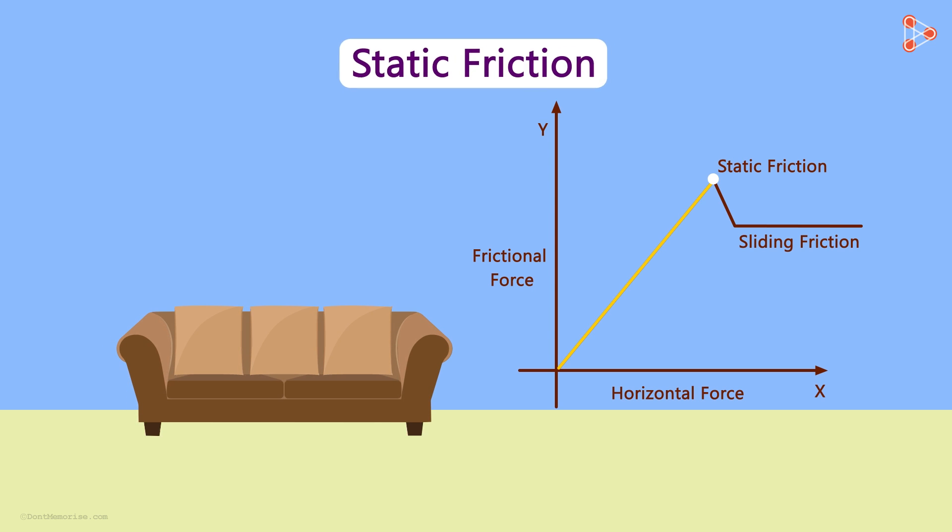This part of the graph is static friction. It's when the sofa is not moving in spite of the force you're applying. And this part of the graph is sliding or kinetic friction when the sofa begins to move. The point around which the sofa just begins the movement is called the breakaway point.